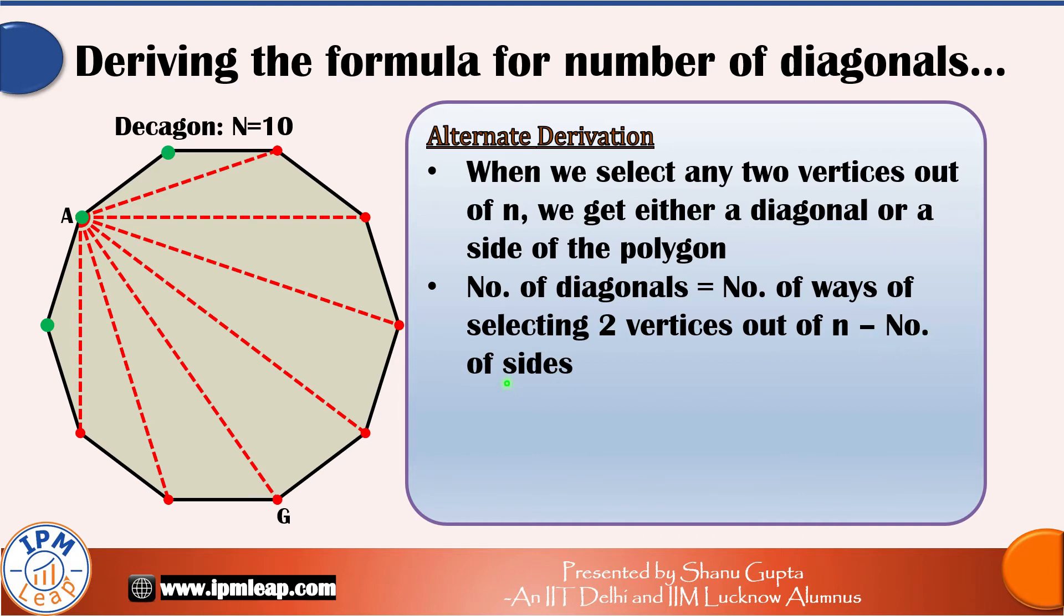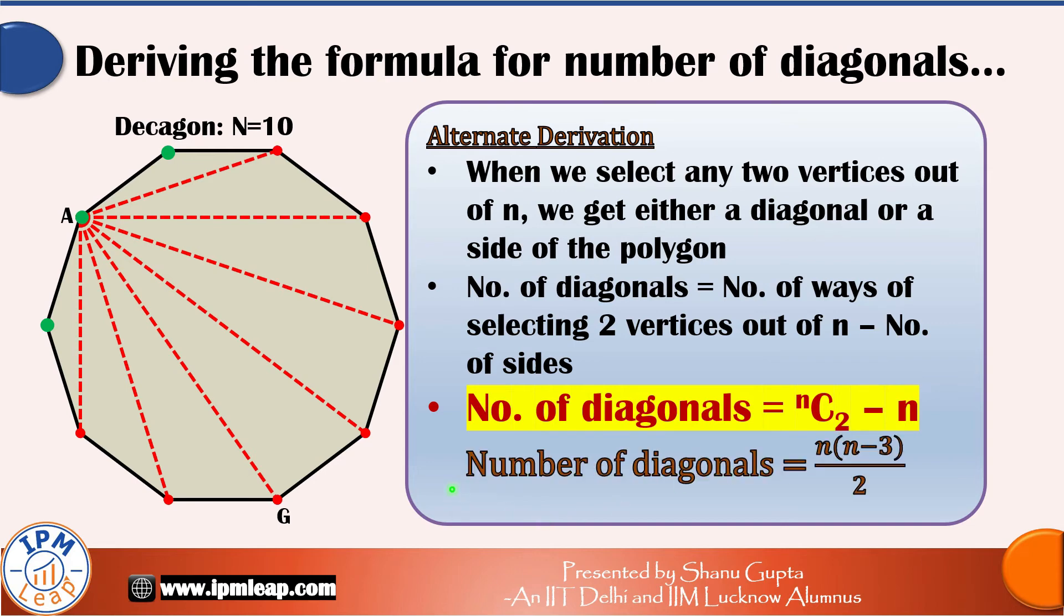Number of diagonals is equal to nC2, which is the number of ways of selecting two vertices out of n minus n, the number of sides. Once you master the concept of combinations, you will know that this formula for the number of diagonals simplifies to n into n-3 divided by 2.